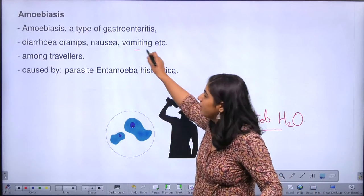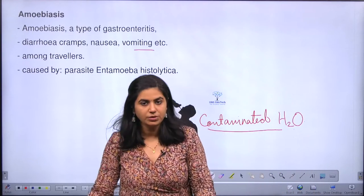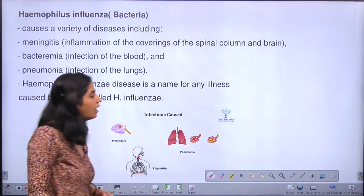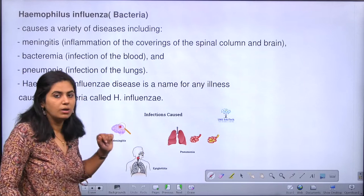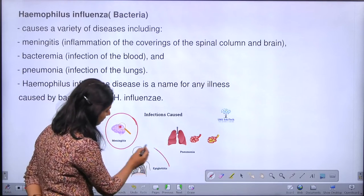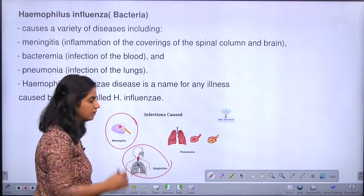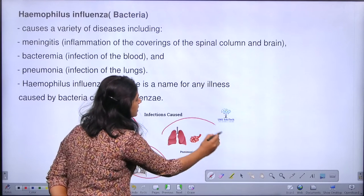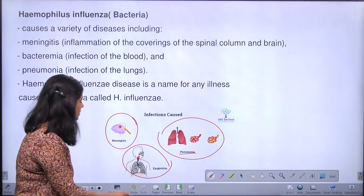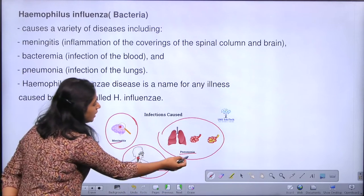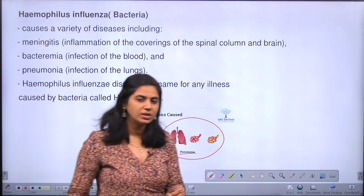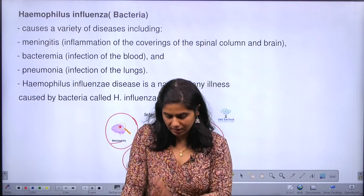Next is Haemophilus influenzae, which is a bacterium. It can cause infection in the brain, in our epiglottis, in our blood vessels, and also in our lungs, which results in pneumonia. The infections caused by Haemophilus influenzae include meningitis, epiglottitis, and pneumonia.